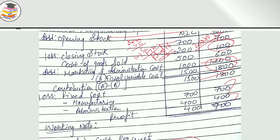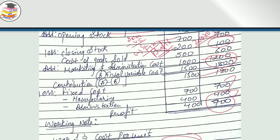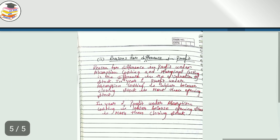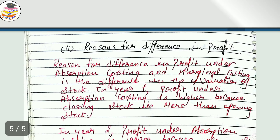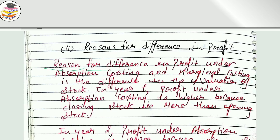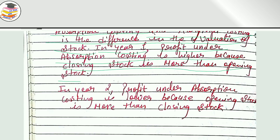The reason for the difference in profit under absorption costing and marginal costing is the difference in the valuation of stock. In year 1, profit under absorption costing is higher because closing stock is more than opening stock. In year 2, profit under absorption costing is lower because opening stock is more than closing stock. This difference arises purely because of stock valuation.